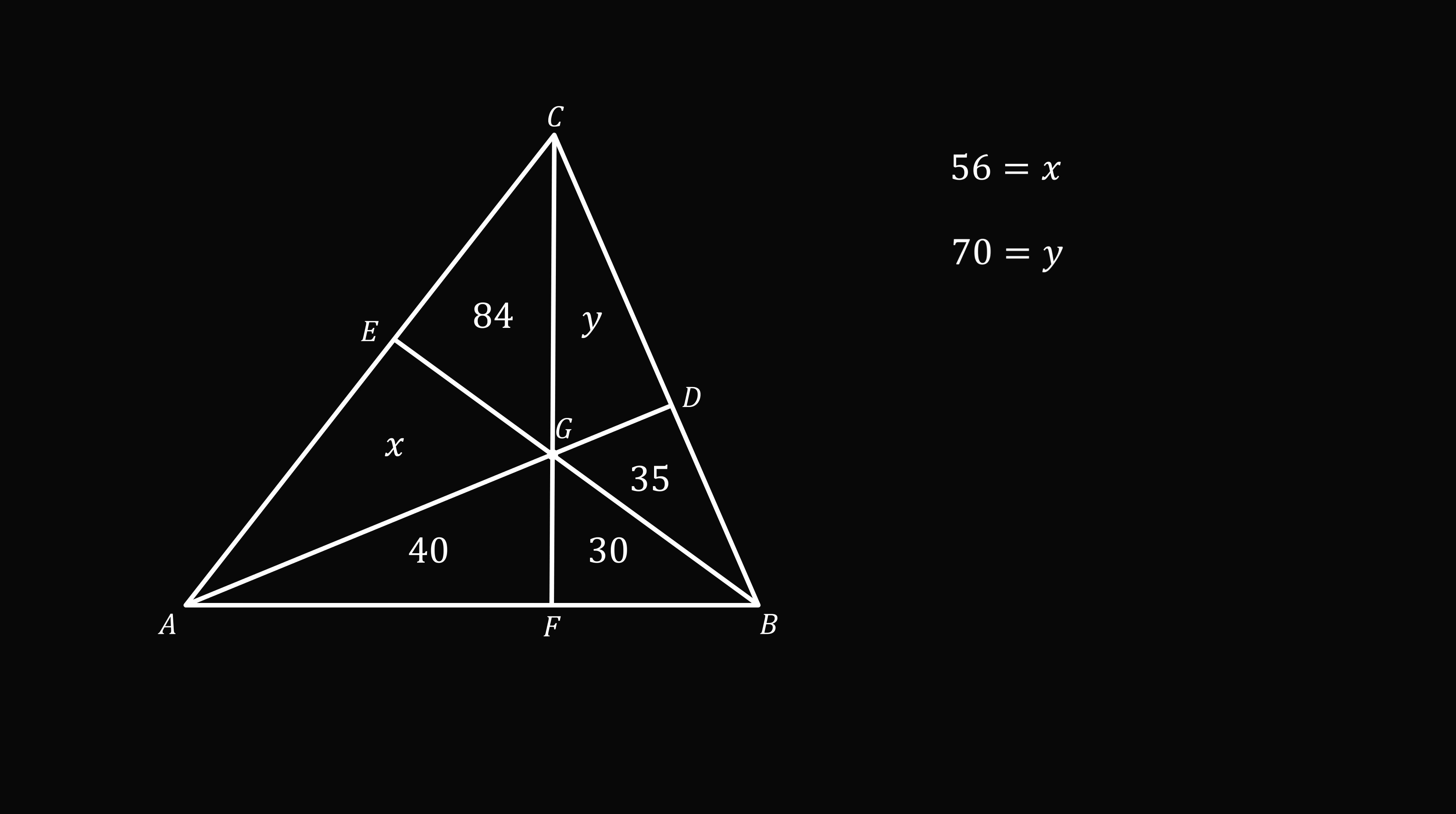So we just need to substitute these values in. The area of triangle ABC is equal to x plus 84 plus y plus 35 plus 30 plus 40. We substitute in and then simplify. And that gives us the area of ABC is equal to 315. And that's the answer.